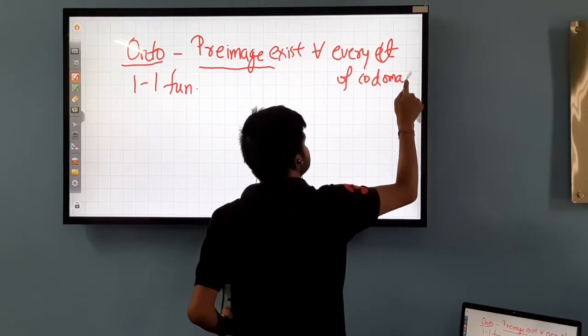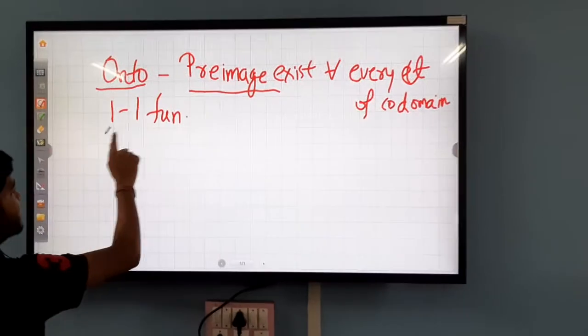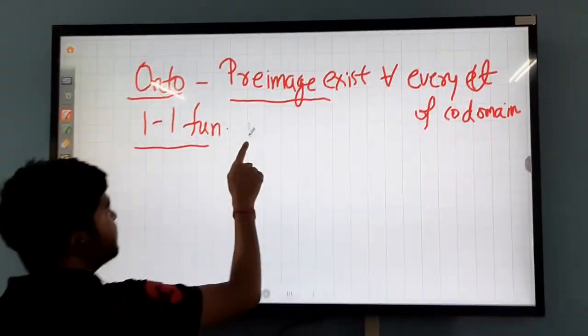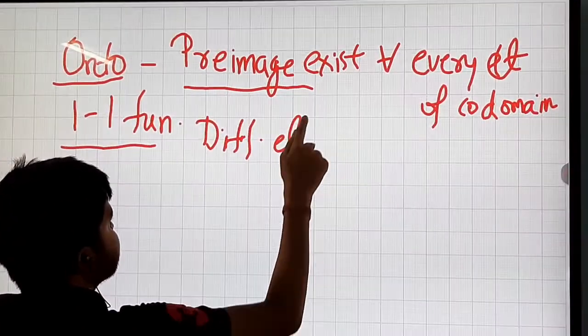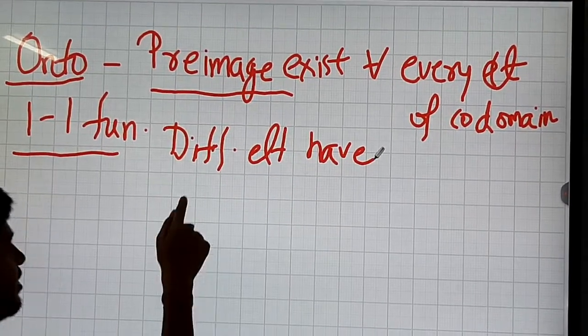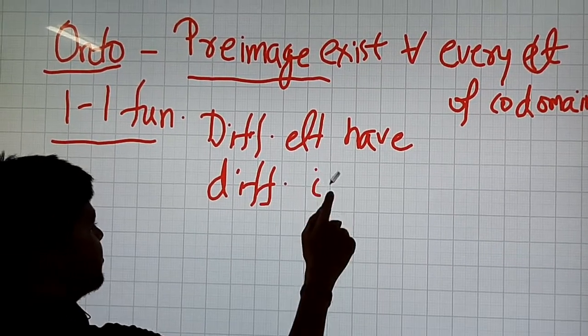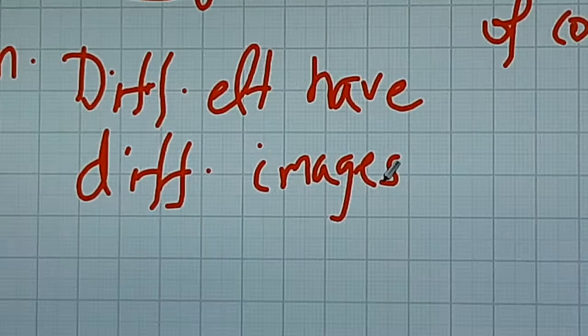And for one-to-one function, what I told is that if different elements have different images, then the function is called one-to-one.